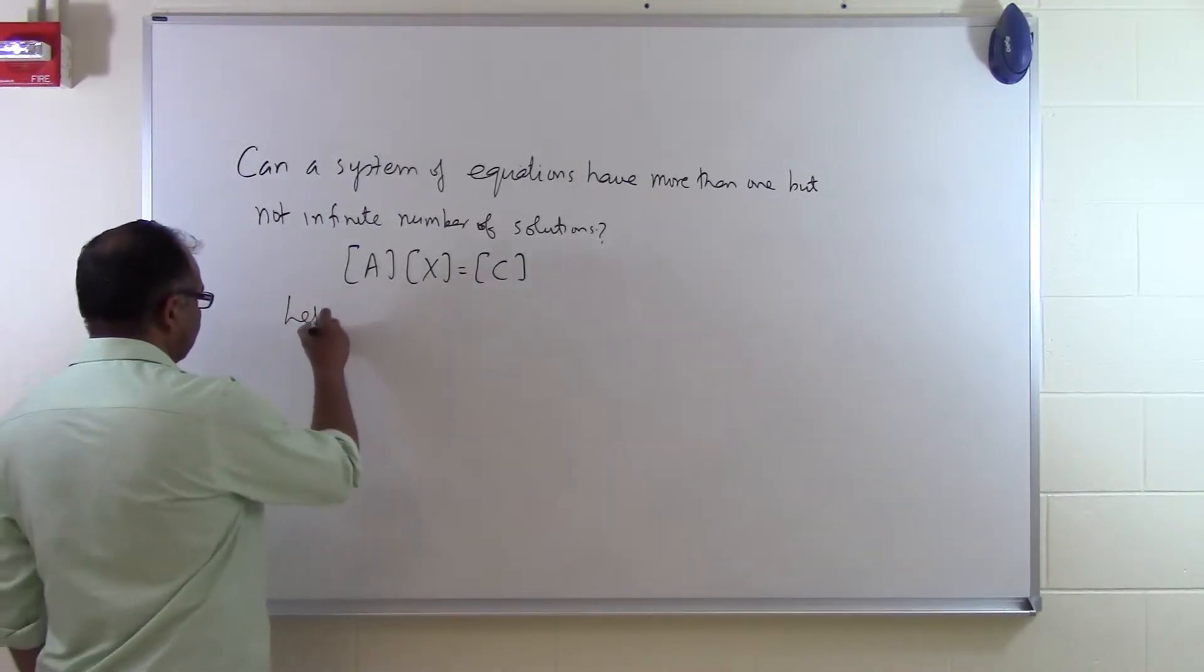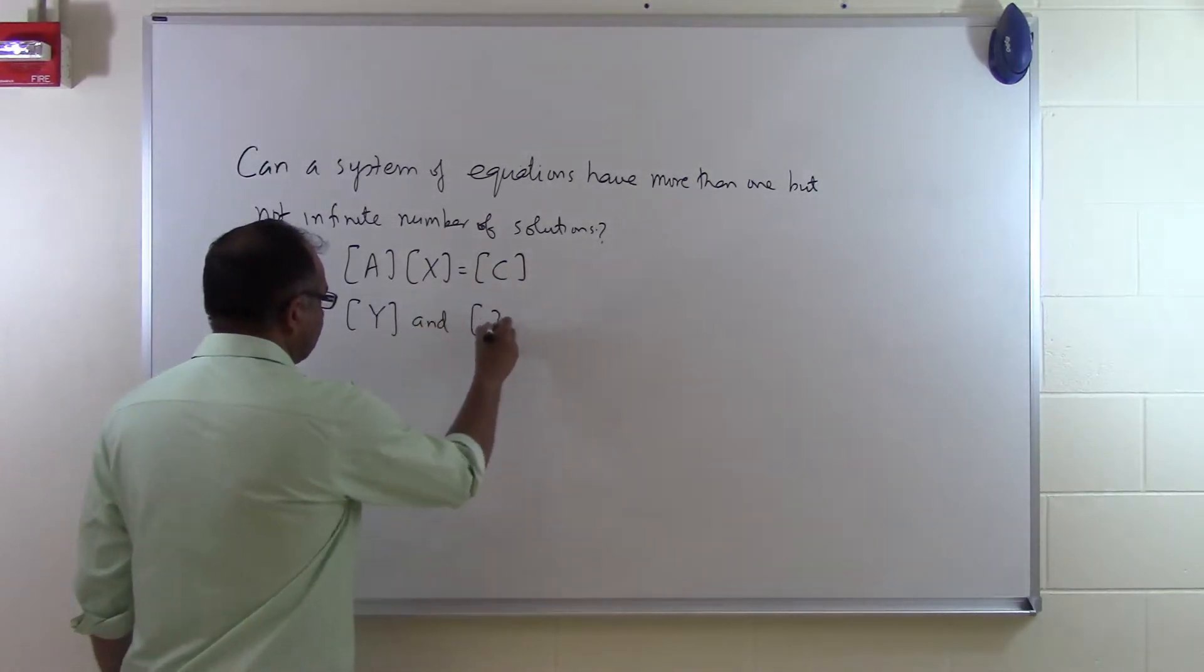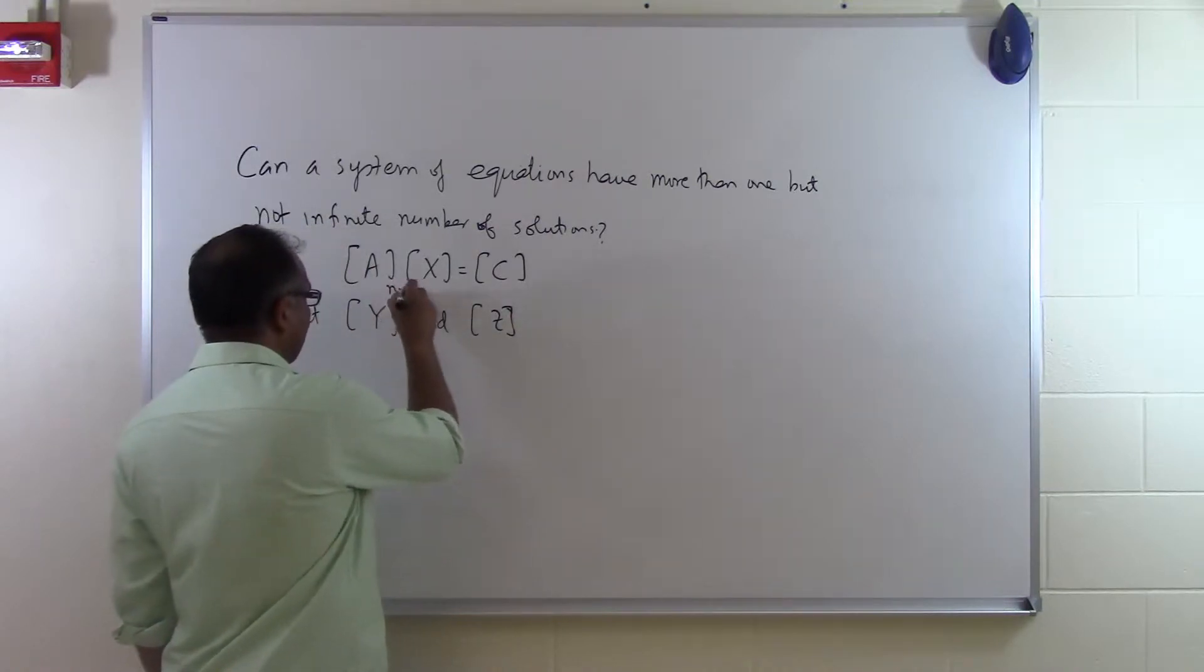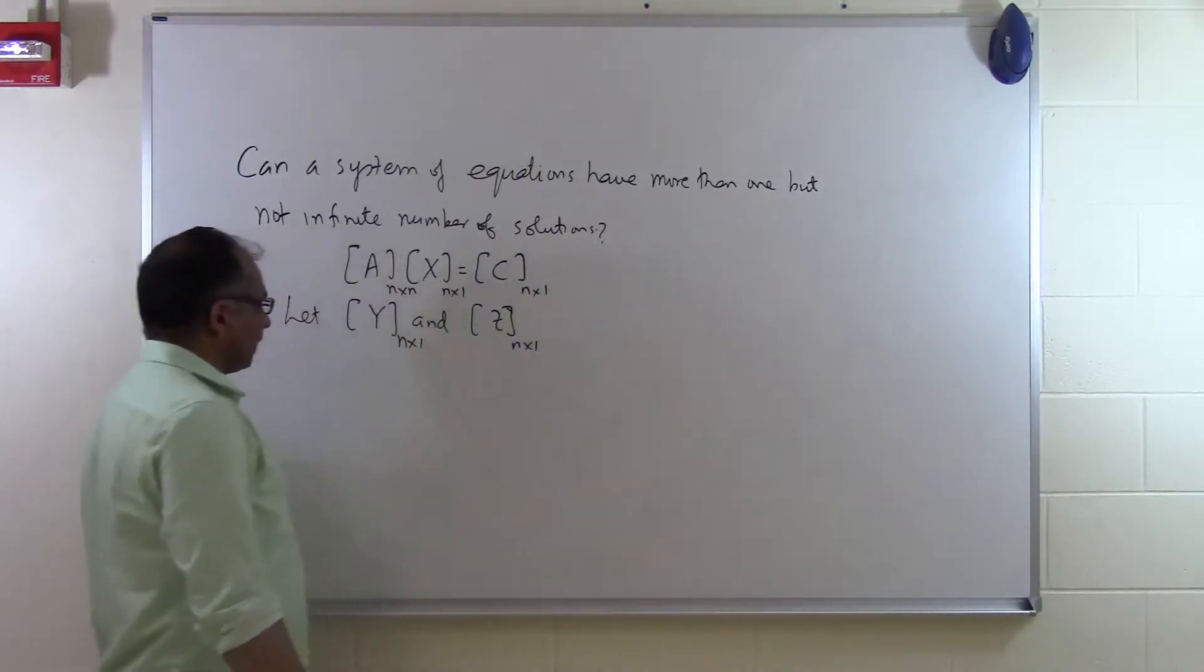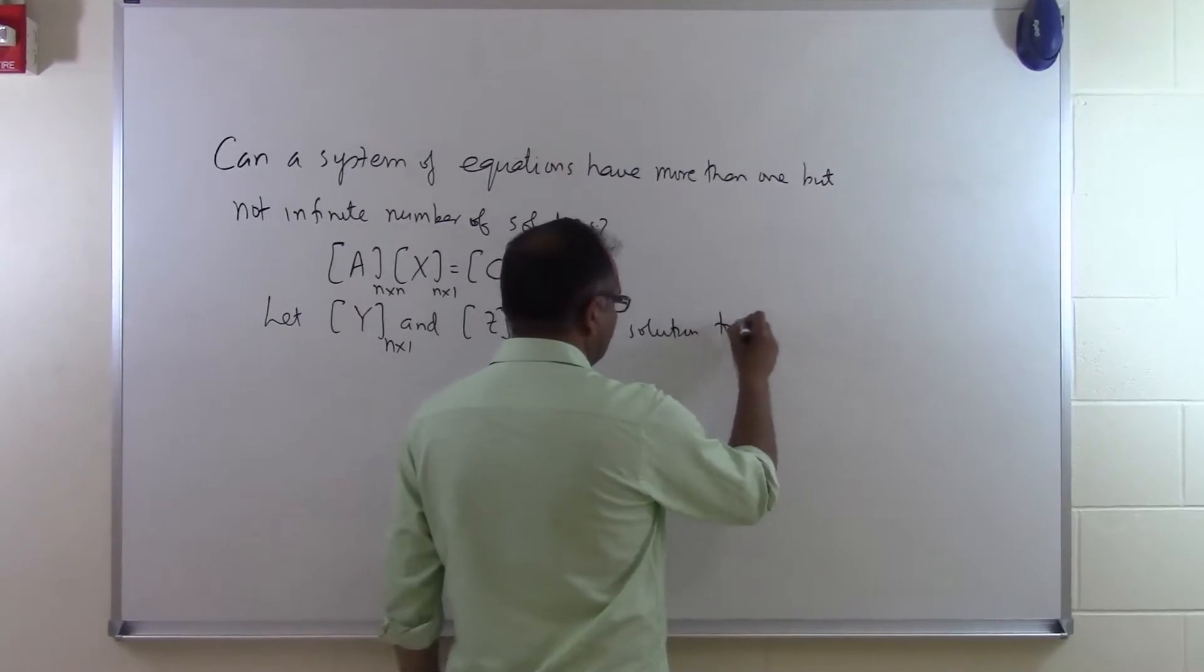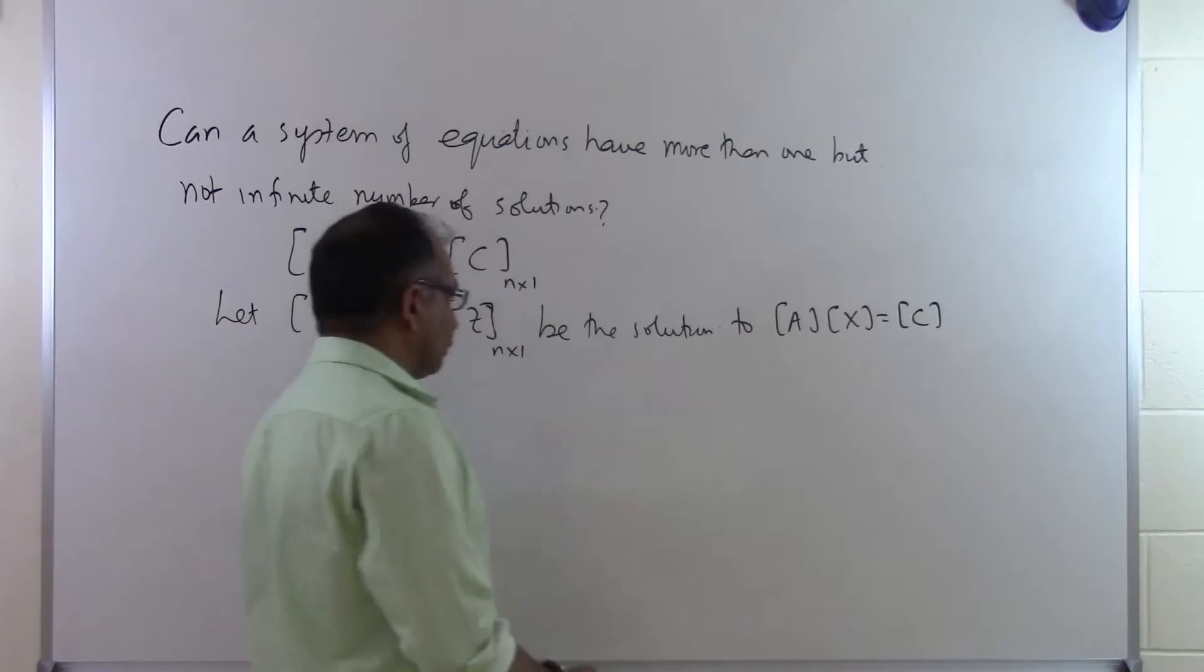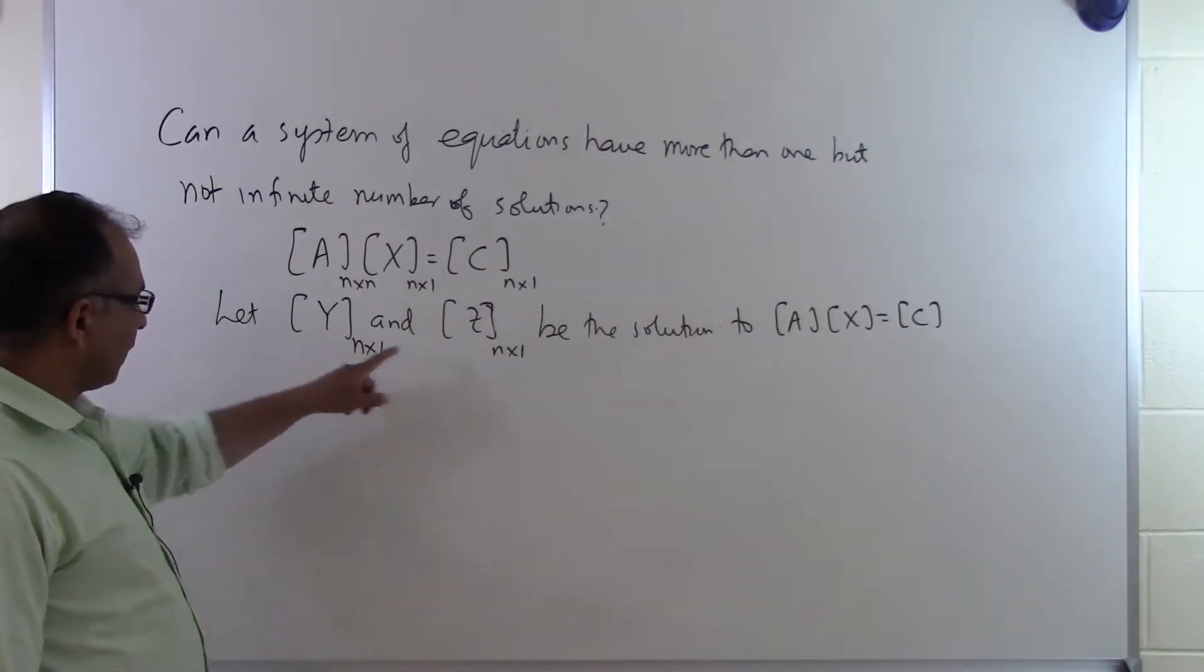So let's suppose somebody says Y and Z, these are the vectors. Let's suppose this is an N by N matrix, this is N by 1, and this is N by 1, and let these be column vectors. So let's suppose somebody says let Y and Z be the solution to this set of equations AX equal to C. So somebody is giving you N equations and N unknowns and you say I am finding two vectors to be the solution Y and Z.